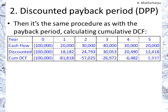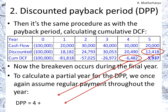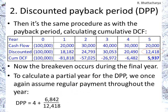The discounted cash flows are accumulated: you have 100,000, adding 18,000 you still need 81,000; adding 24,000 you still need 57,000; and so on. As you can see, we cross zero somewhere in our last year. To calculate the partial year, you take the 6,000 that's still needed, divide it by the 12,000 that you would expect to get, and you're about half a year in — which gives the discounted payback period.